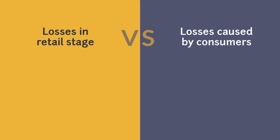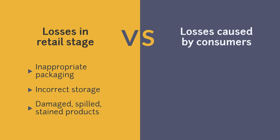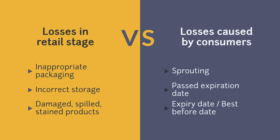In developed countries, the causes of food losses are divided into two groups: the losses in the retail stage and the losses caused by consumers. Some of the losses in the retail stage are inappropriate packaging that damages the food, incorrect storage of the products, and damaged, spilled, or stained products. On the other hand, some of the losses caused by consumers are sprouting of cereals and root products, fruits whose expiry date has passed, and consumers mixing the expiry date with the best-before date.